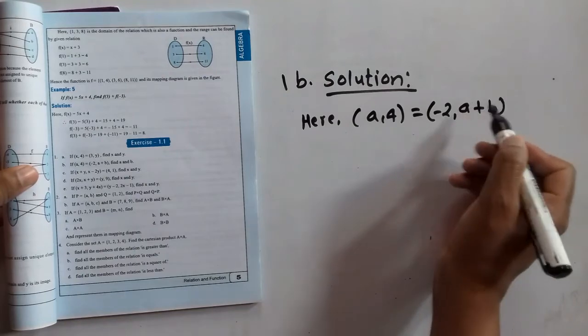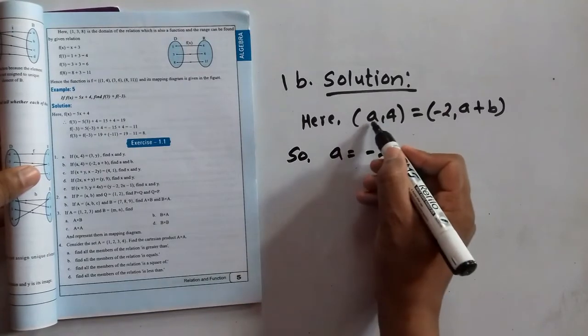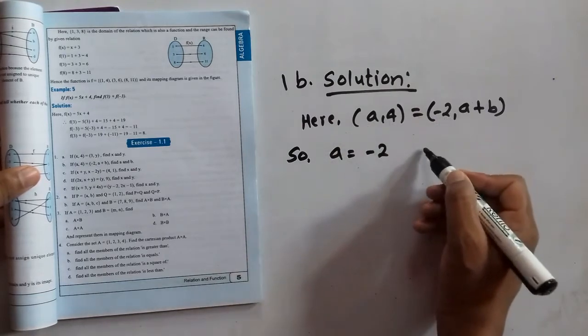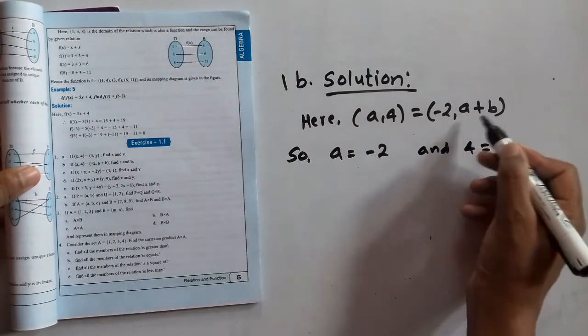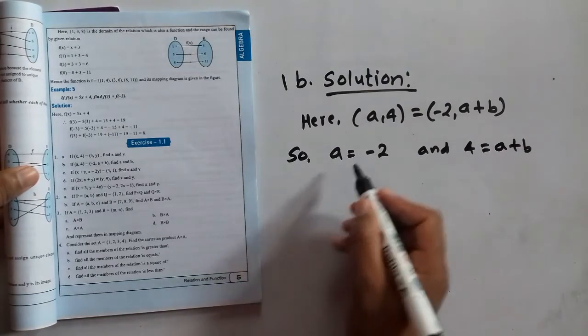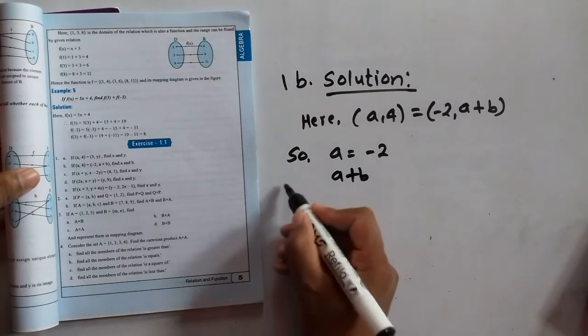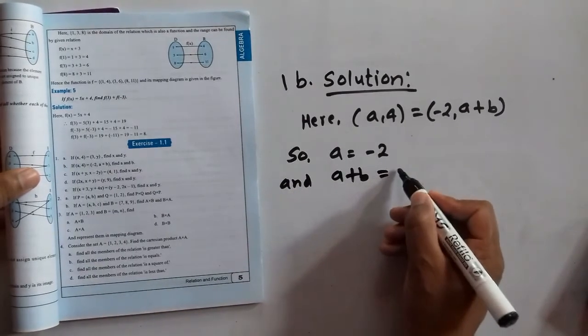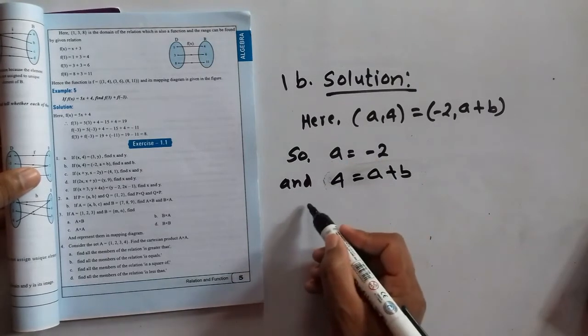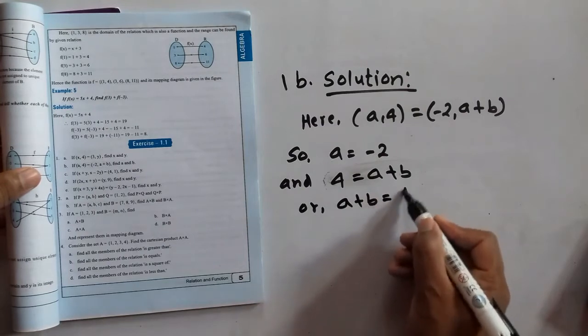Here, (a, 4) = (-2, a + b). So a equals to minus 2. Your first element is a, your first element is minus 2, and second element here is 4 and this side second element is a plus b. From this let us write this below: a plus b equals to 4, or a plus b equals to 4.